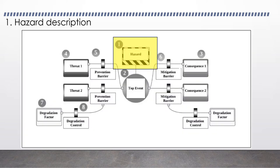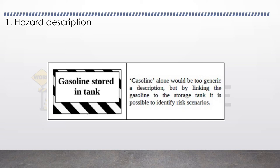The hazard is put at the box above the top event. Hazard has the important function of defining the scope for the whole Bowtie. Generic hazards can lead to generic Bowties, and thus the hazard should be specific. This tends to add value because it increases the level of detail in the rest of the Bowtie. In this example, gasoline alone is too generic, but by linking the gasoline to the storage tank, it would be possible to add more details to the risk scenarios.